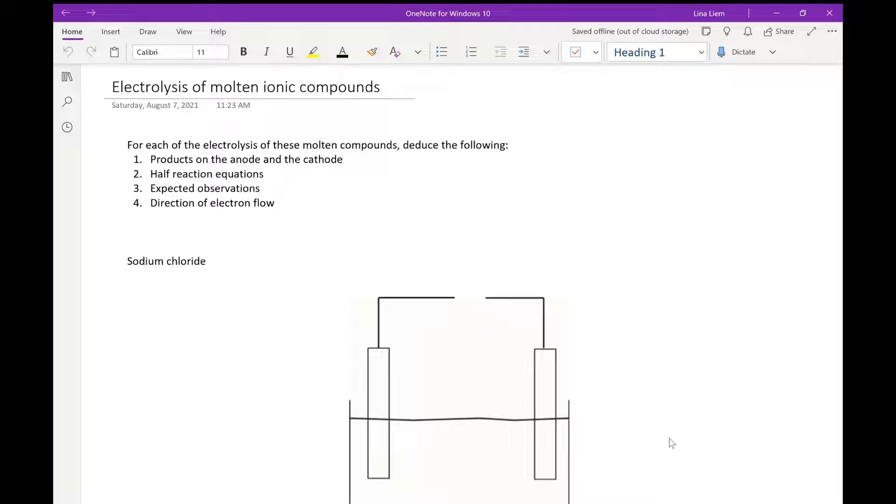We're going to see a few examples and for each of these examples we are going to figure out the products produced on the anode and on the cathode, how to write the half reaction equations, how to predict observations that we are going to see, and the direction of the electron flow.